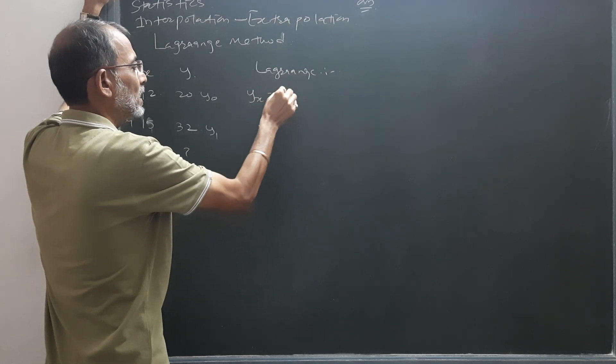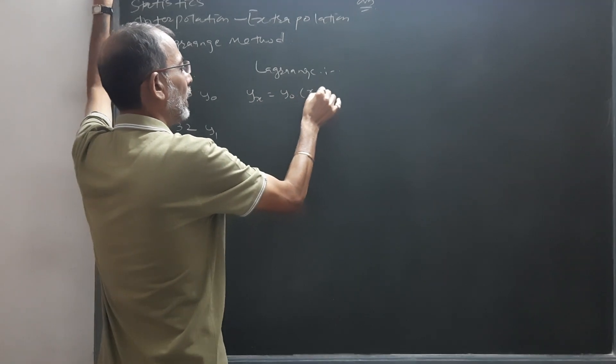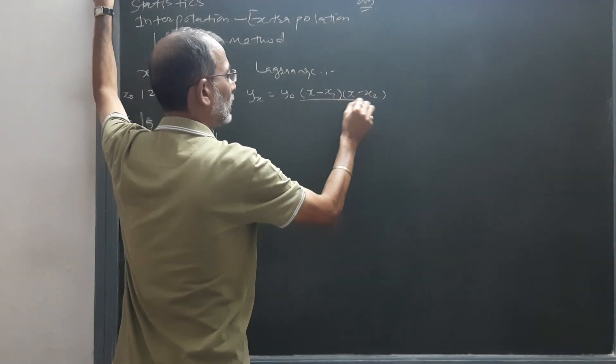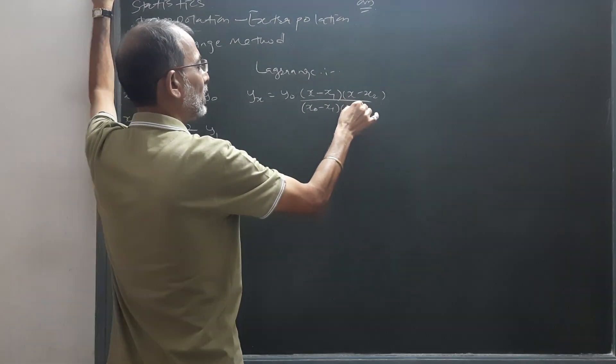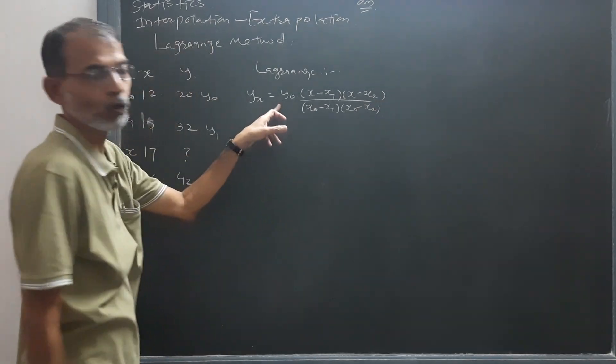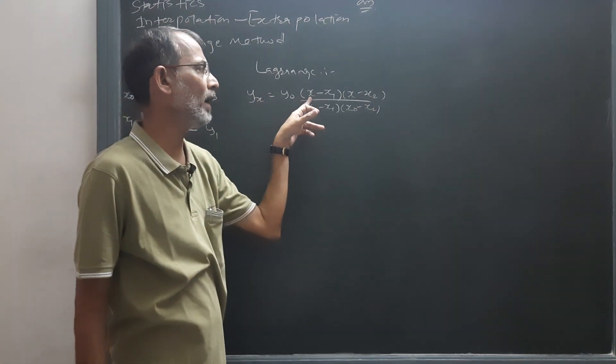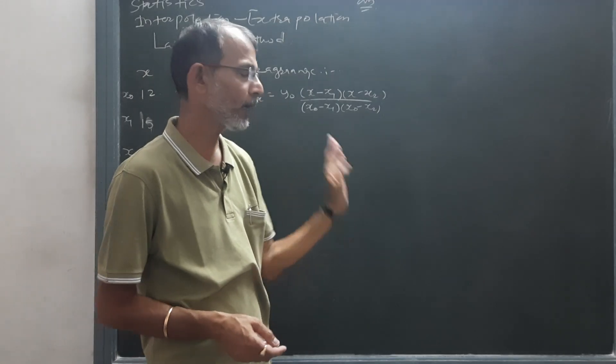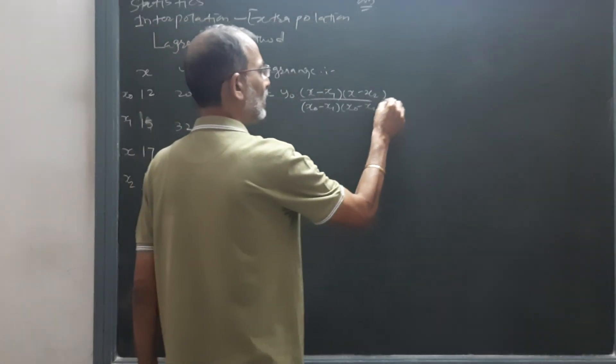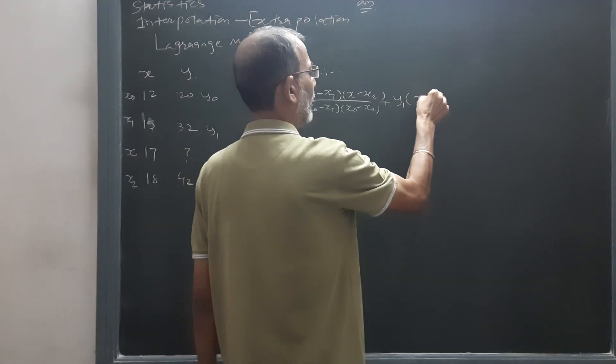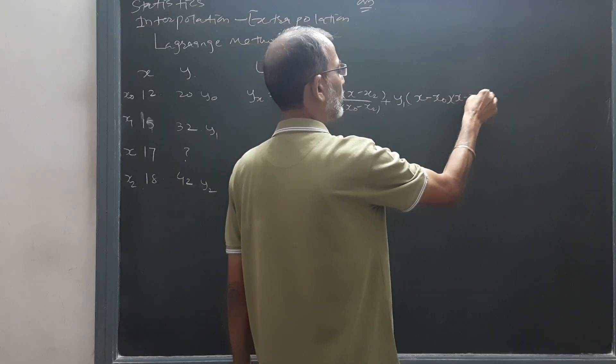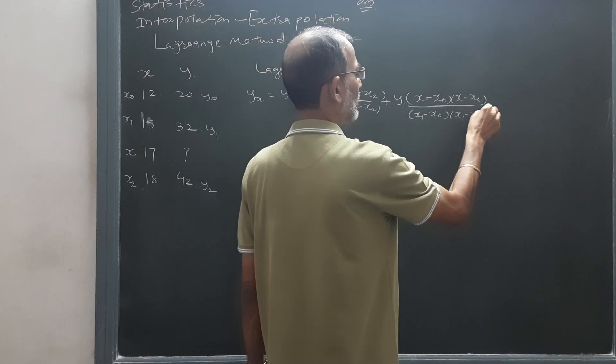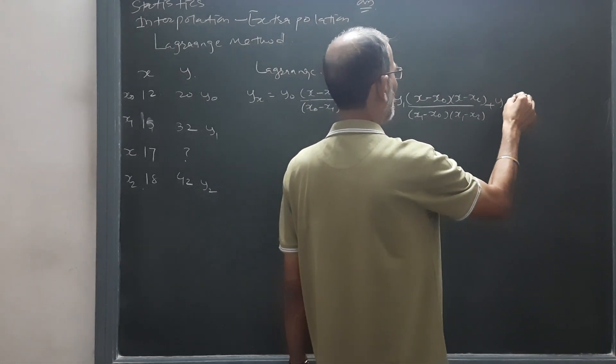Formula for Lagrange is: yx is equal to y0, x minus x1 and x minus x2 upon x0 minus x1, x0 minus x2. You will have to start from y0. Here from x, x1 and x2 will be subtracted, and at denominator from x0, x1 and x2 will be subtracted. Then after will come y1, so x minus x0 and x minus x2 divided by x1 minus x0, x1 minus x2. Then after will come y2, so x minus x0 and x minus x1 divided by x2 minus x0 and x2 minus x1.